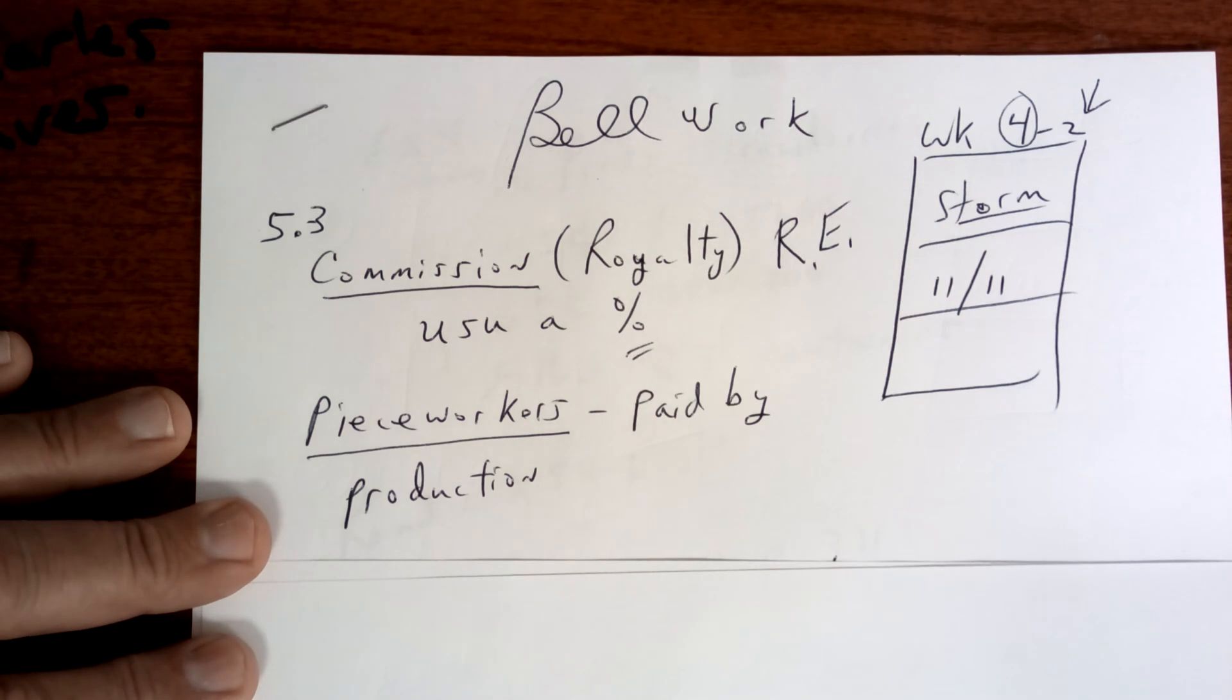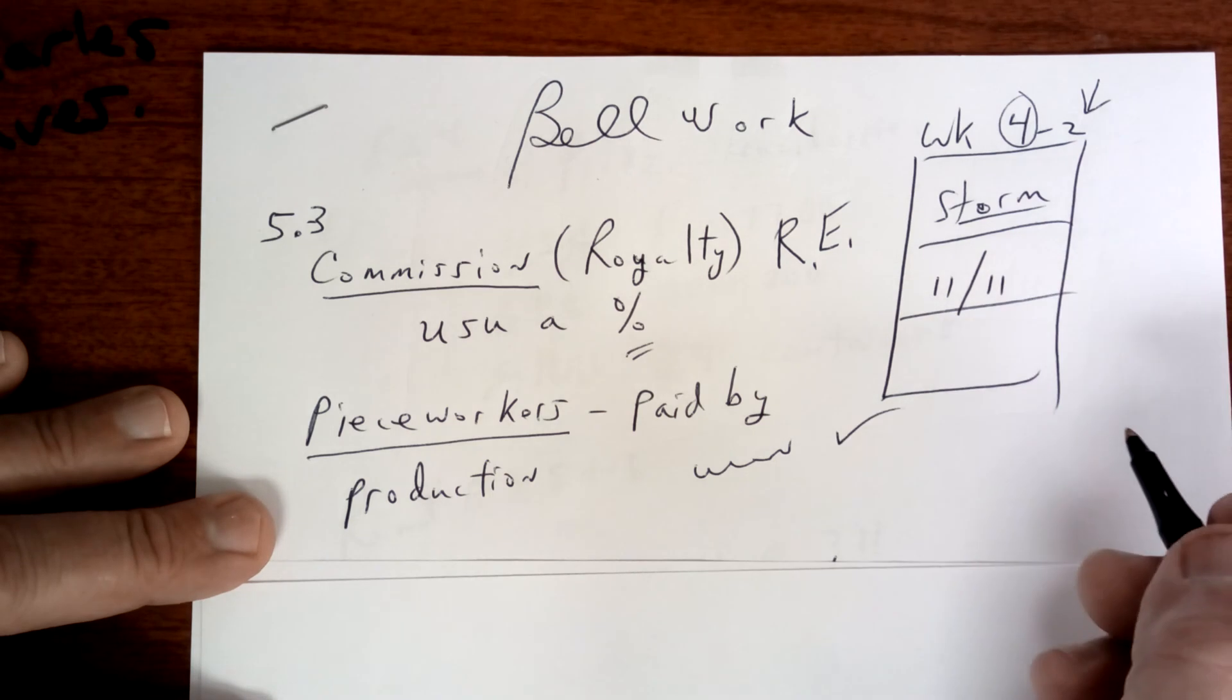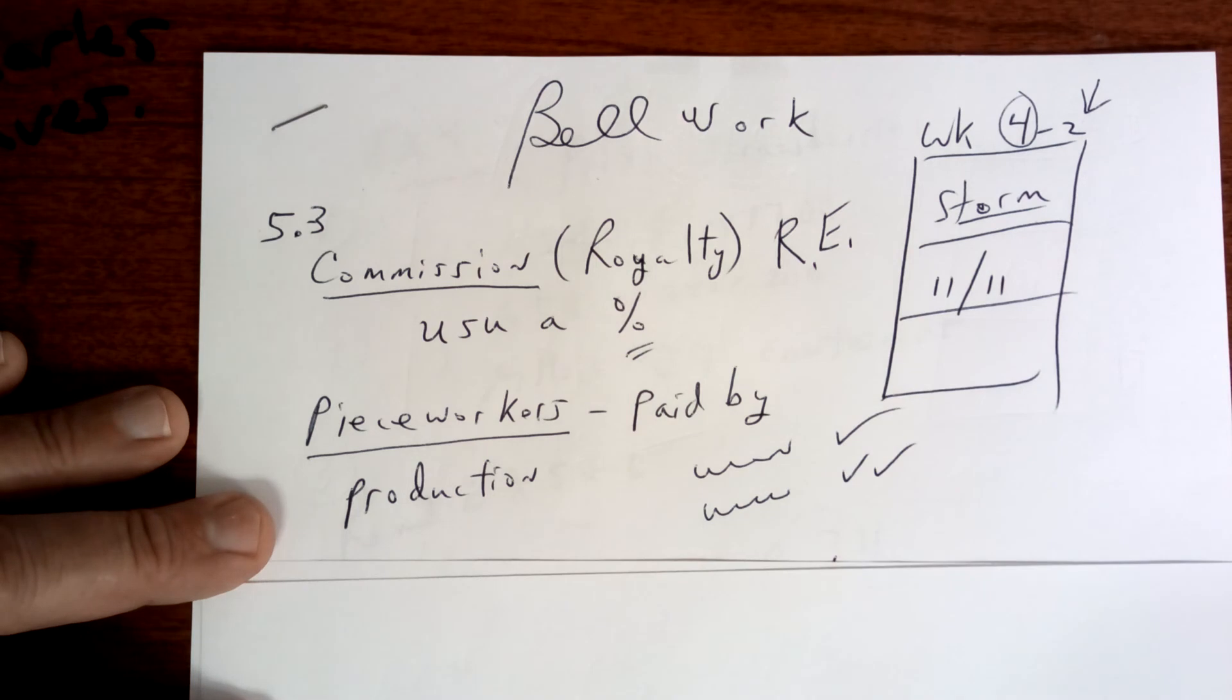Piece workers. They are paid by the production. If they produce a certain amount, they get paid a certain amount. If they produce more than that, then they get paid additional money. Those are the piece workers.